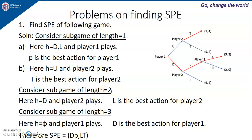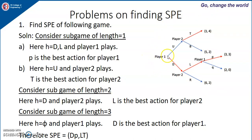Now consider the sub-game of length 2, which occurs after history h = d, where player 2 is playing. Player 2 must decide between l and r: if l is selected he gets a payoff of 3, if r is selected he gets a payoff of 2. Therefore, player 2 selects l. Now consider the whole game, which is the sub-game of length 3, with history ∅ where player 1 plays. He must decide between u and d: if u is played he gets a payoff of 1, if d is played he gets a payoff of 3. Therefore it is better that he plays d.